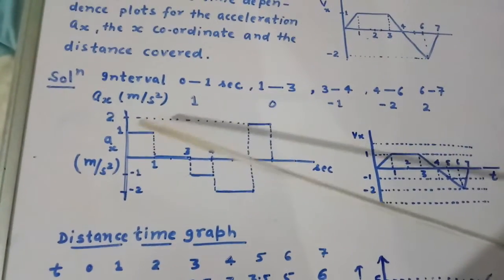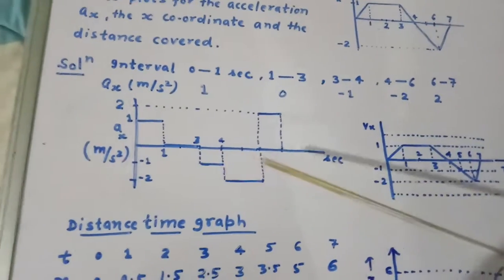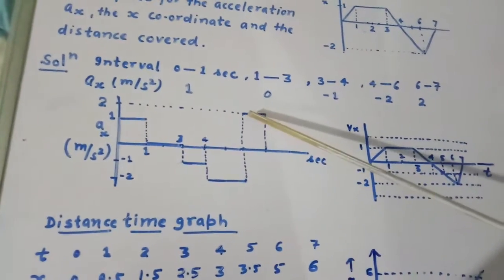So, plot is shown here. This is 1 meter per second square. Here it is 0. Then it is minus 1. Then minus 2. Then here plus 2.